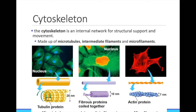Think about the skeleton inside of your body. It has two main functions: support and movement. It is made of bones that are hard and literally hold you up. It is also where muscles attach to allow you to move. The cell also has a skeleton — the cytoskeleton. The prefix cyto means cell, so cytoskeleton means cell skeleton.